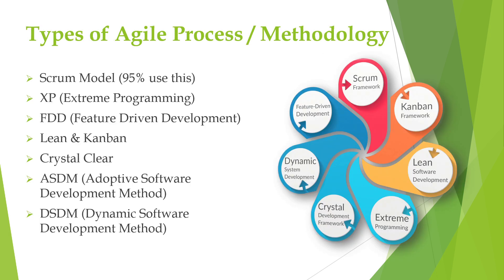Next we will see the types of agile process or methodology. We have many types: Scrum model, Extreme Programming (XP), and FDD — Feature Driven Development.